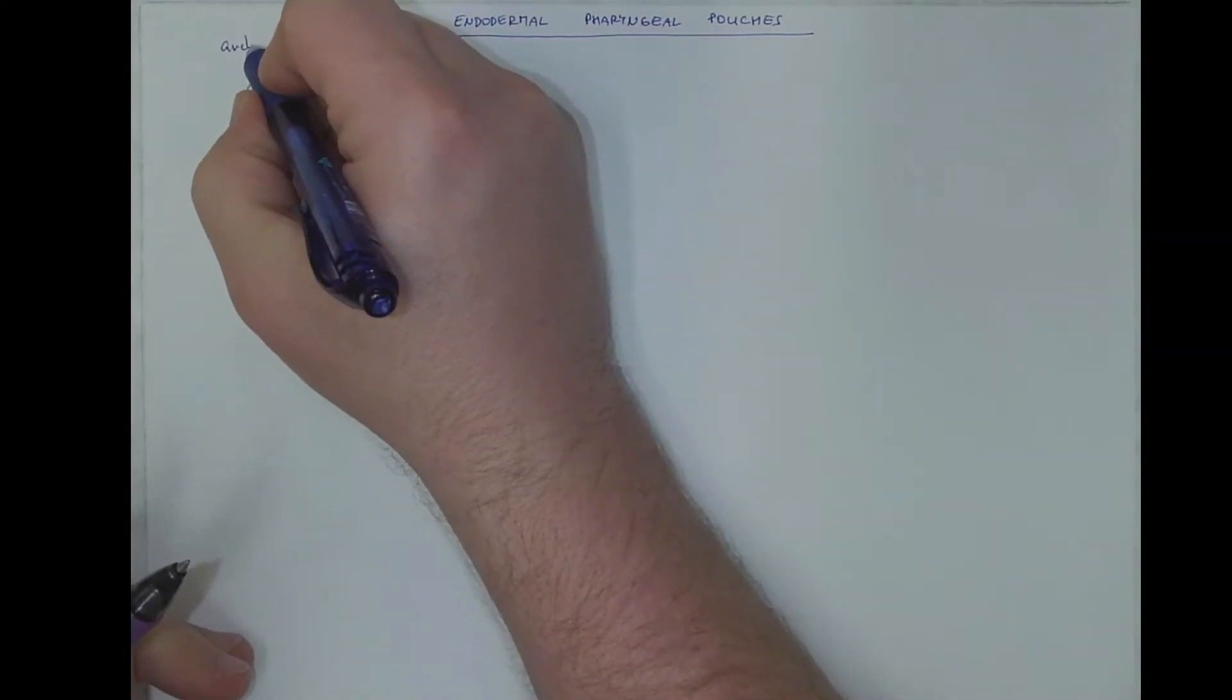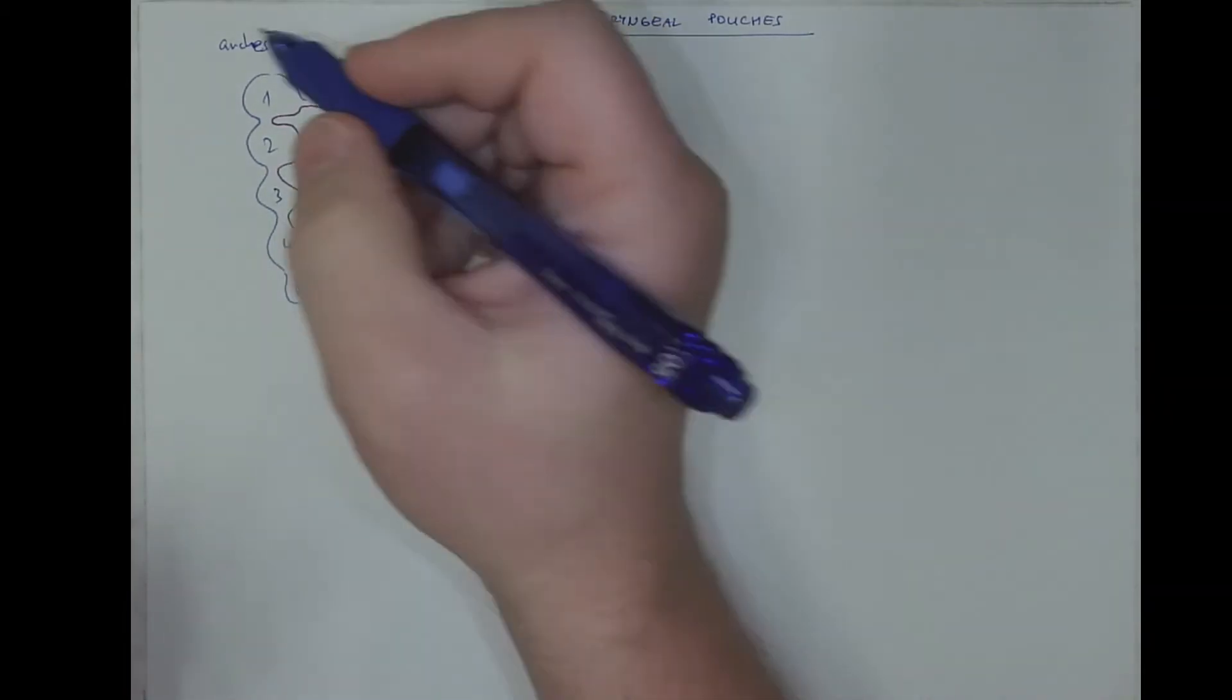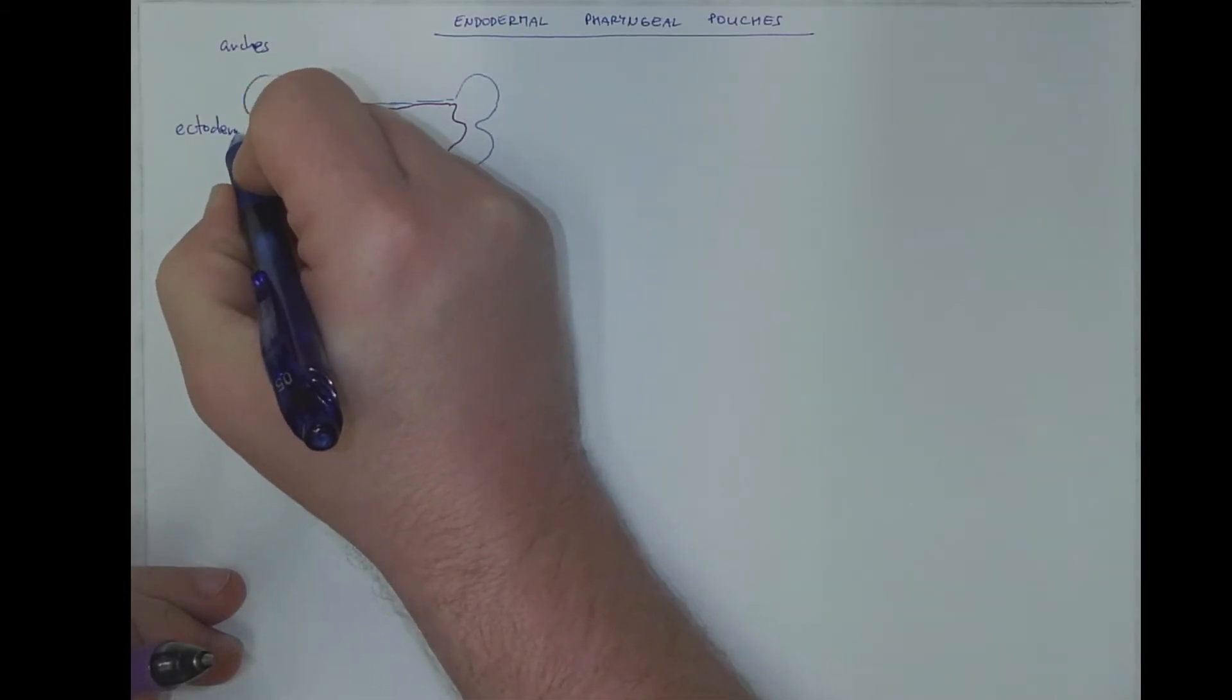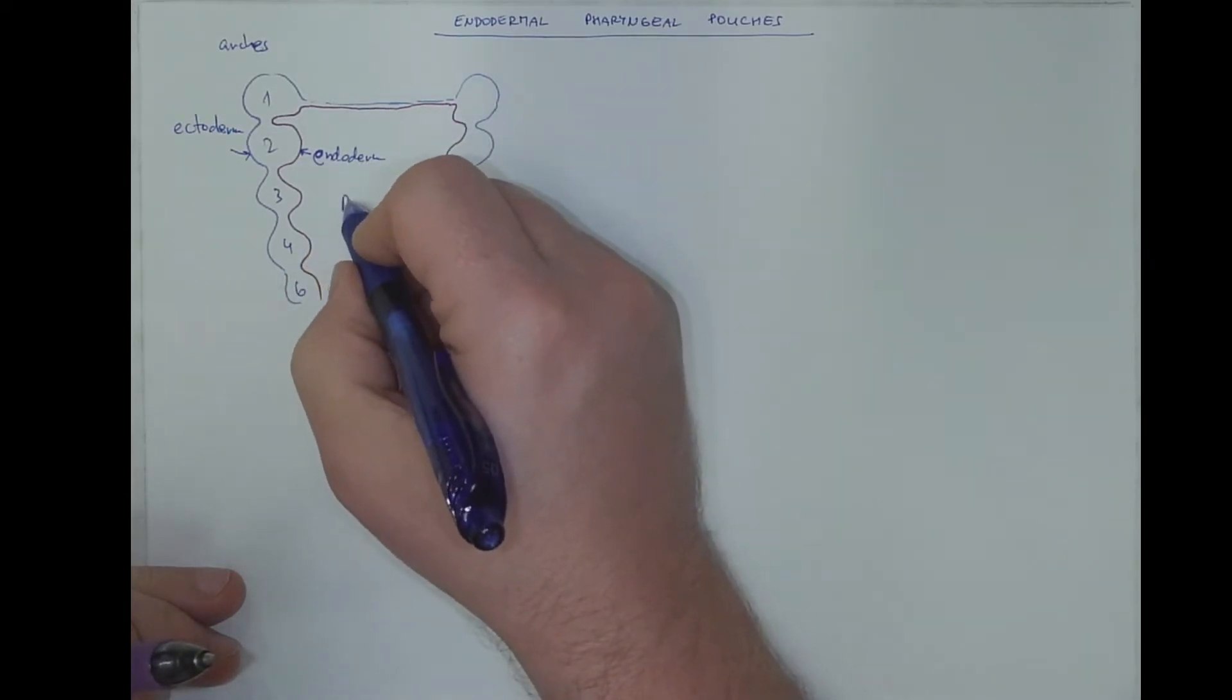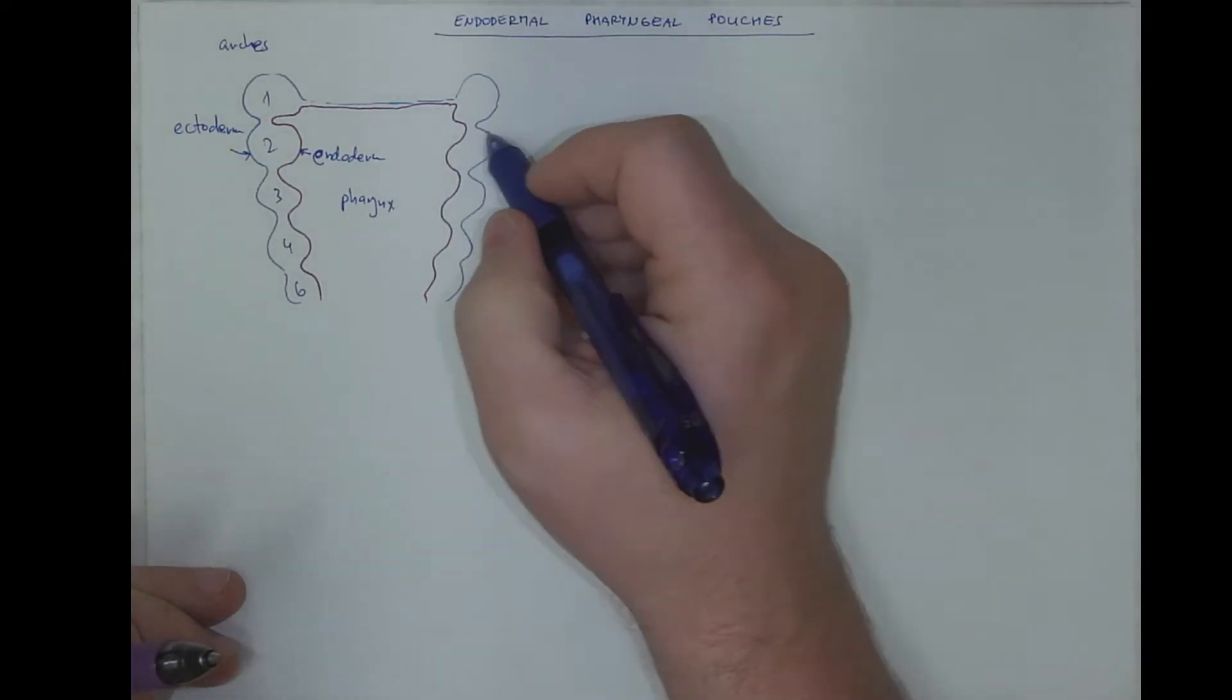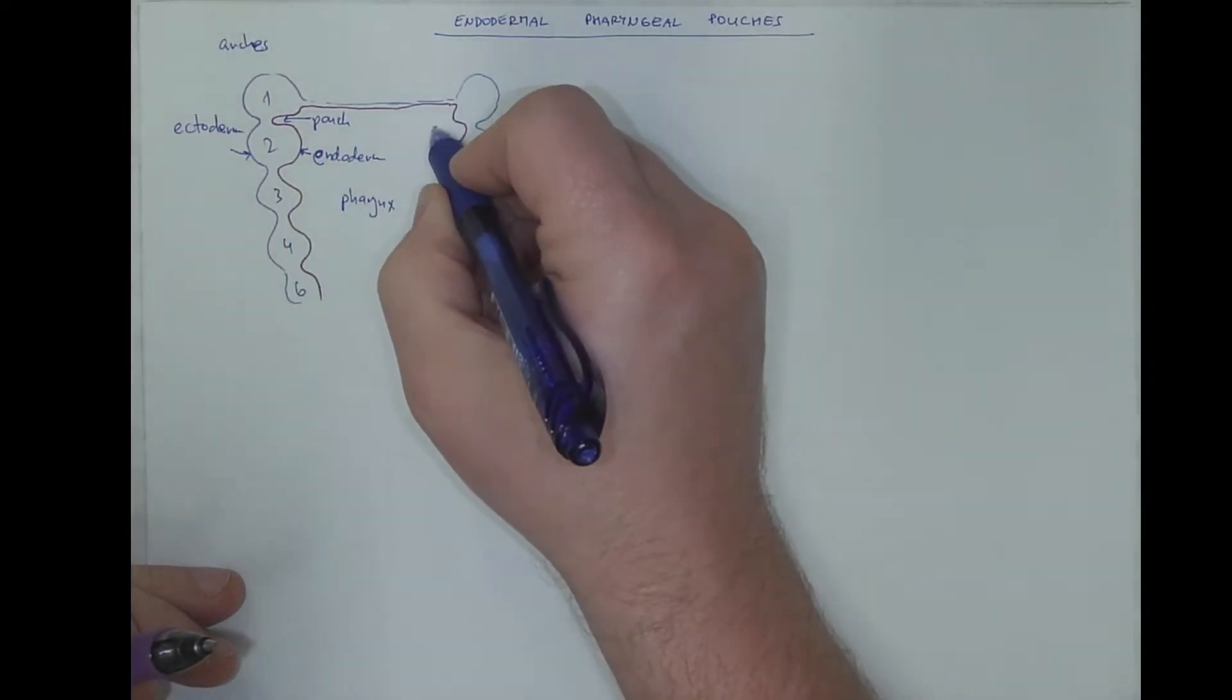So this will be the arches, number 1, 2, 3, 4, 6. This outside is the ectoderm, inside there is the endoderm of the pharynx and there are the pouches. This is the pouch, let's number the pouches, 1st pouch.